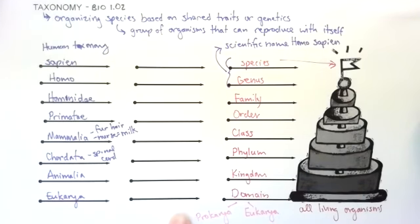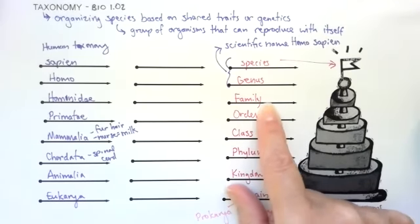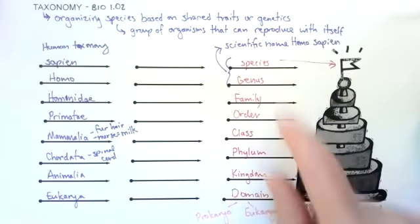Why did I leave some blank arrows in the middle here? You need to remember, and you need to know for your test, domain, kingdom, phylum, class, order, family, genus, species.